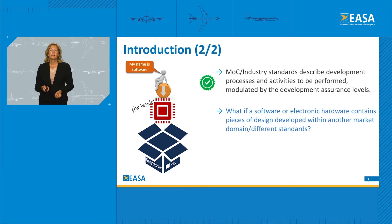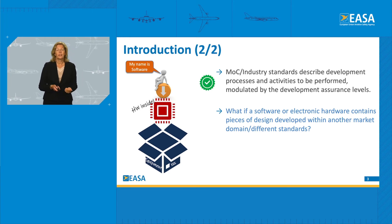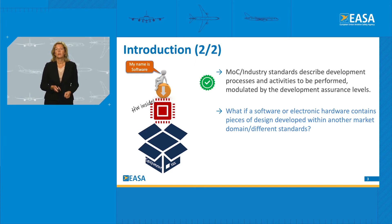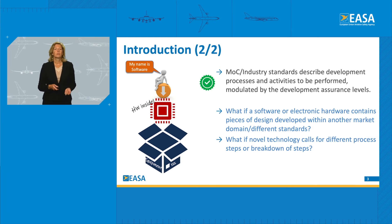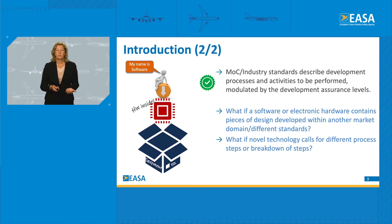But what if a software, Airborne Electronic Hardware, or Electronic Hardware contains a piece of design that comes from another market? Other markets could be automotive, railway, or medical. And if they are developed with those industry standards, how do we know that these other industry standards and, as a consequence, this piece of software or hardware would be compliant or would fulfill our safety objectives? What if, as well, we have novel technology that calls for a different subset of activities or breakdown of steps used to develop and assure that the equipment performs as intended?